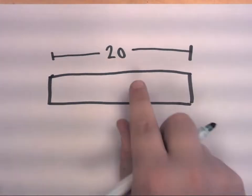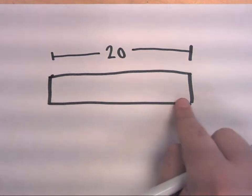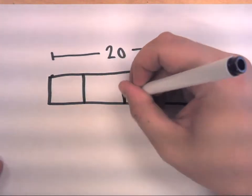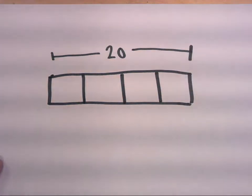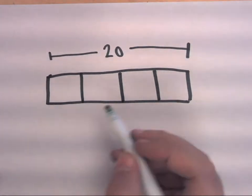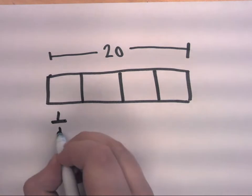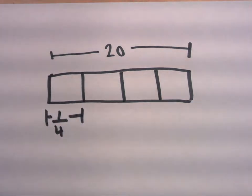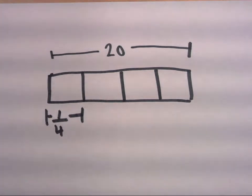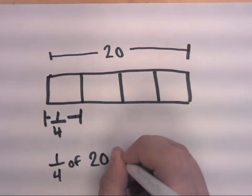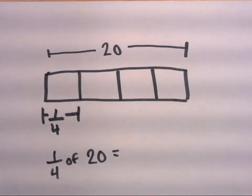Now I'm going to divide this unit into, let's say, 4 equally sized pieces. And I want to know, what does 1/4 of 20 equal? So if I wanted to find 1/4 of 20, how could I use this diagram to help me out?